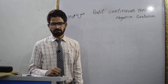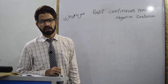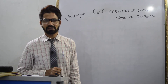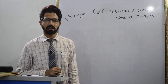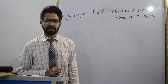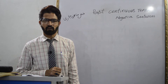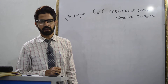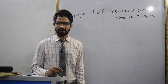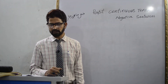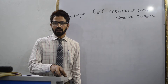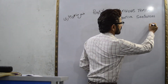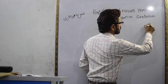First of all, we shall learn about the negative sentence — how we can identify the subject, verb, and object in a sentence, and then how to translate it into English. Let's learn its principle first of all.